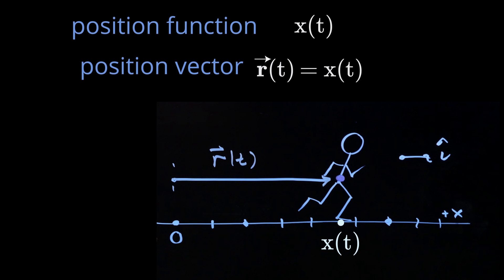And so we write i hat. Now, x of t is what we call the component of the position vector. Remember, a vector has a component and a direction. And the component is the position function.